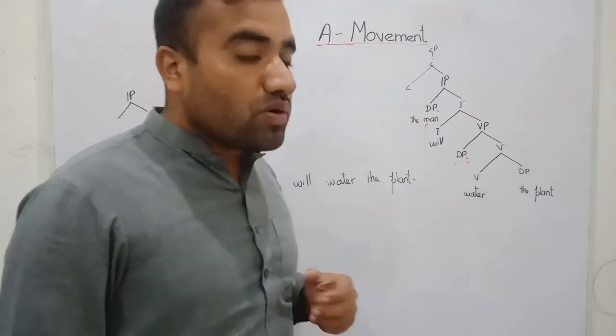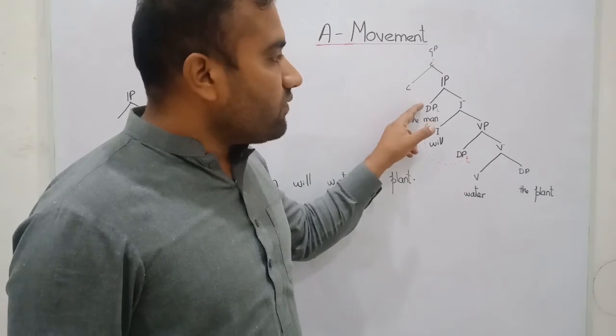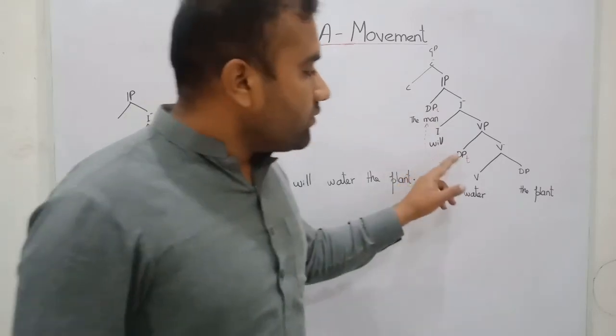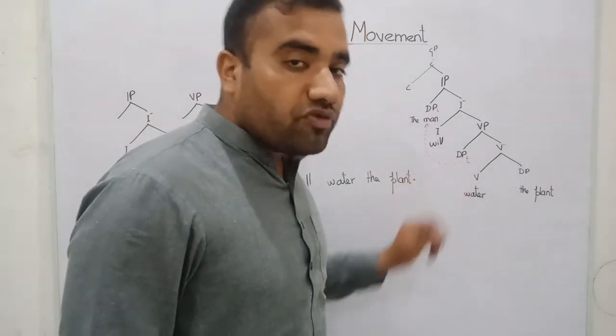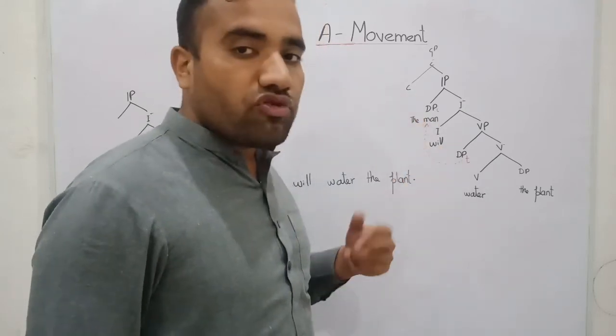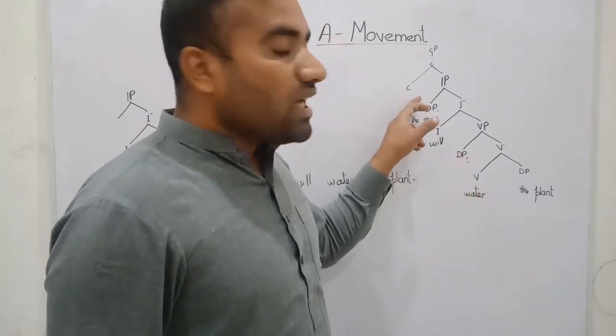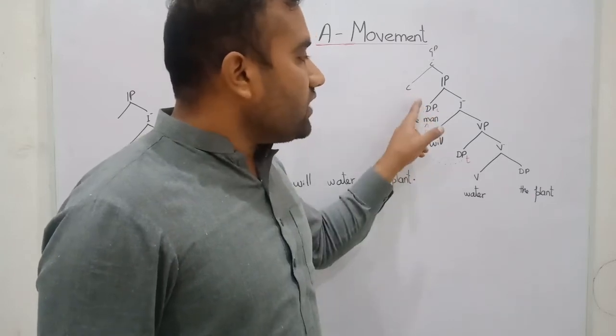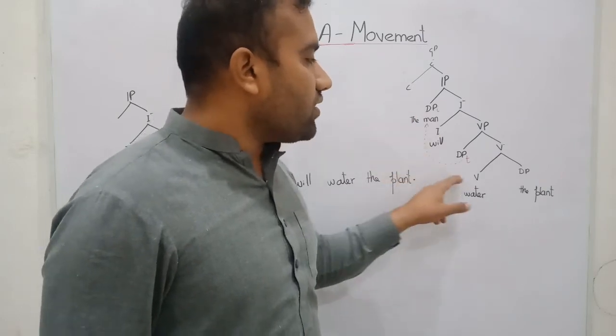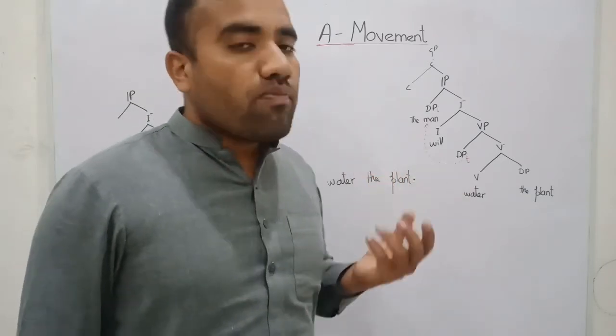For assigning the case, this I triggers this argument position and takes this at its specify position. The placement of both the DPs are the same. This is the argument position and this is also the argument position. Both are argument positions. So this DP is moving from this place to the upper place. In this way the case of this DP has been valued. And this type of movement is called the A-movement, and this type of movement is due to the case checking movement.